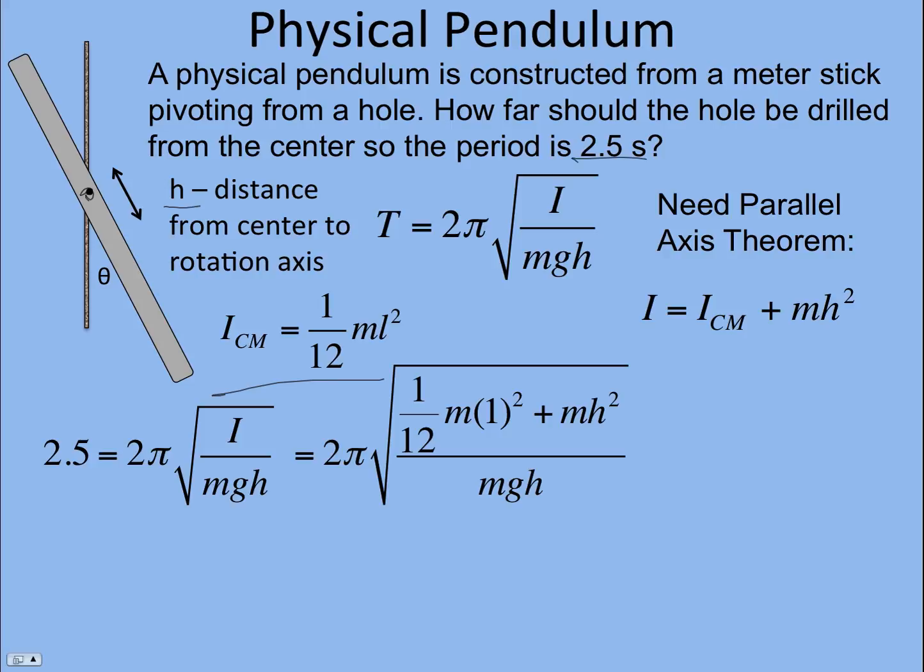So we set the period equal to 2.5 seconds. We want to solve for h and the rotational inertia. It's 1/12 ml squared where L is 1. It's a meter stick in this case. And h is the same h as here. H is the distance from the center to the rotation axis.